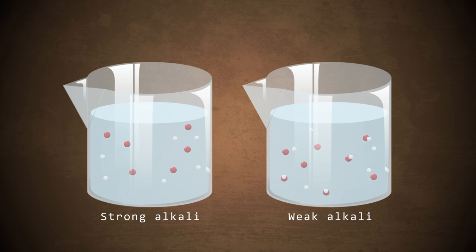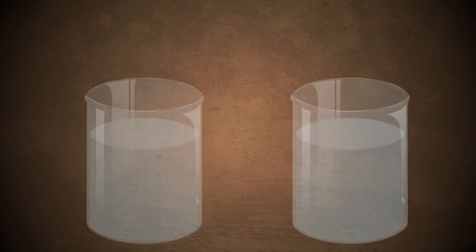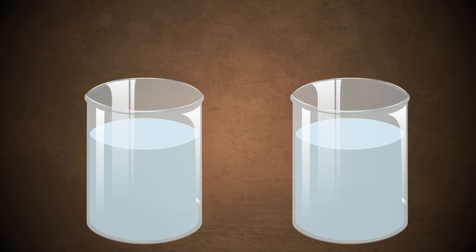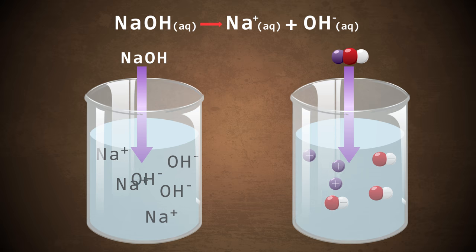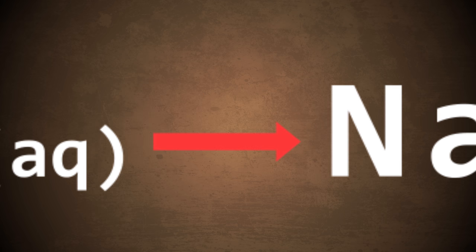Much like their acidic counterparts, we must consider the extent of dissociation in water. So let's have a look at sodium hydroxide as an example. In water, sodium hydroxide dissociates into an Na plus ion and an OH minus ion. Since sodium hydroxide almost completely dissociates 100%, it is considered to be a strong alkali. So we use a forward arrow in the equation.